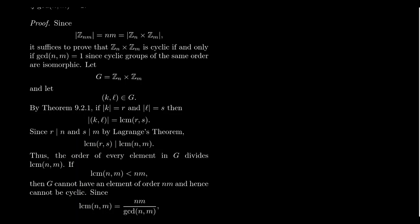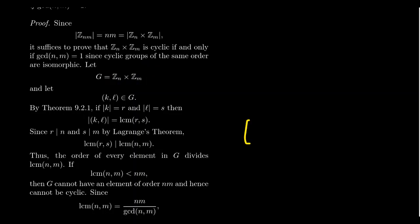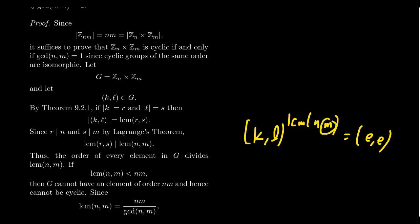The significance here is that the LCM of R and S is the order of the element in question. The order of every element in G divides the LCM of N and M, because everything in ZN raised to the Nth power gives the identity, and everything in ZM raised to the Mth power gives the identity. So if we take an element (k, l) and raise it to the LCM of N and M, we get the identity — any multiple of N sends k to the identity, and any multiple of M sends l to the identity.